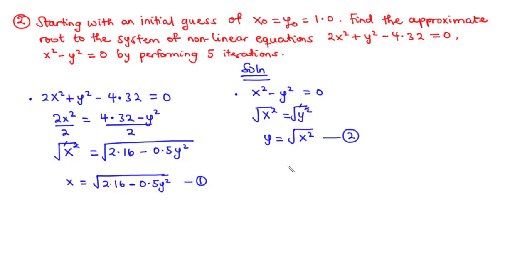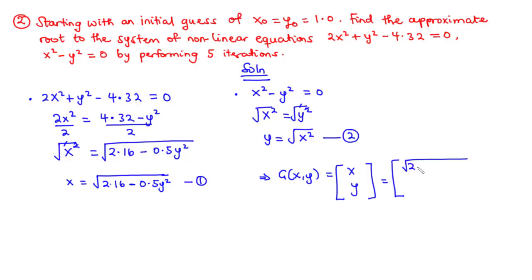We can now write j(x,y) as the vector: x equals the square root of 2.16 minus 0.5y squared, and y equals the square root of x squared. This is the possible arrangement we have arrived at, and based on this we are going to perform the iterations to find the approximate roots to the system of nonlinear equations.